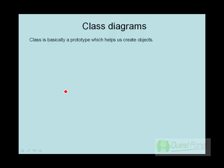Both the static and dynamic views are very important when we write a technical document. Classes are basically a prototype which helps us to create objects — you can say it is like a data type, and by using the data type you can create objects. They define the static part of a project; they define a blueprint, and from that blueprint objects are created.